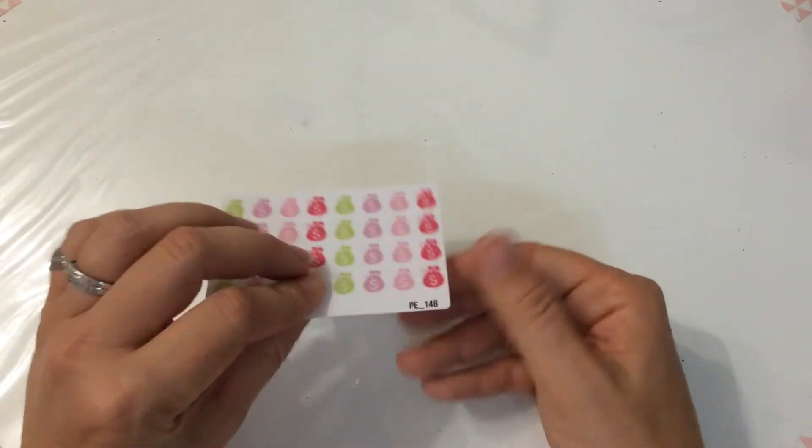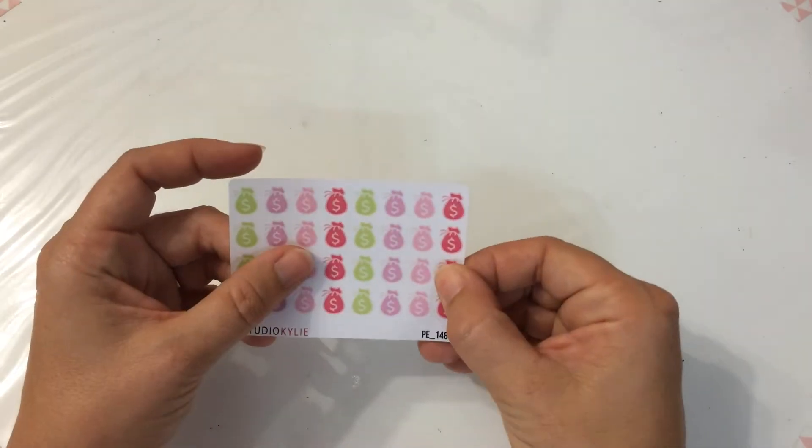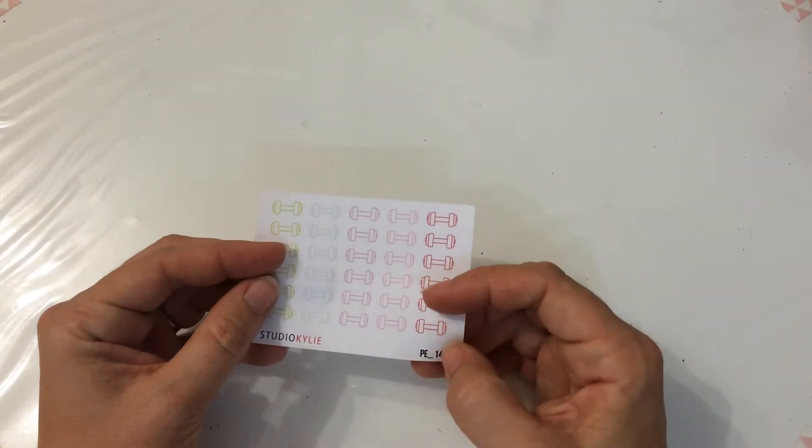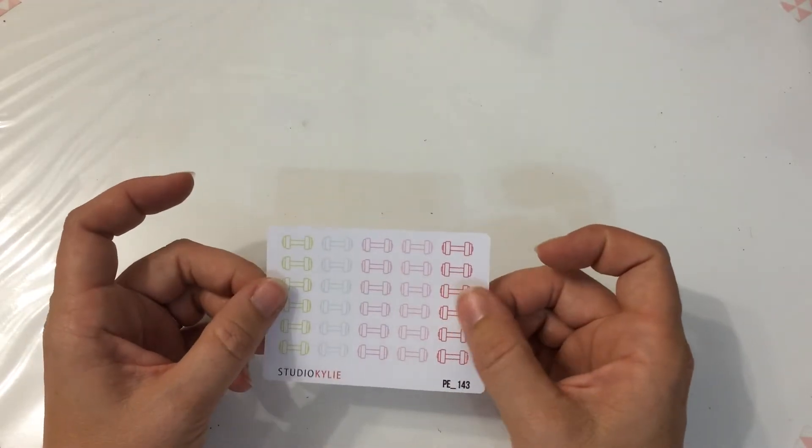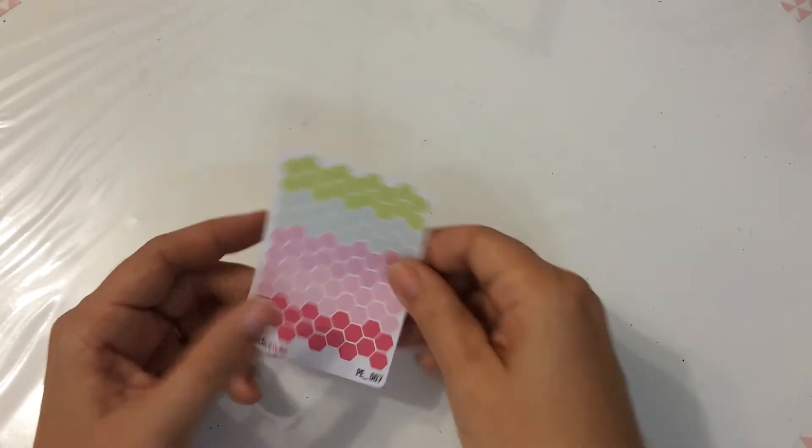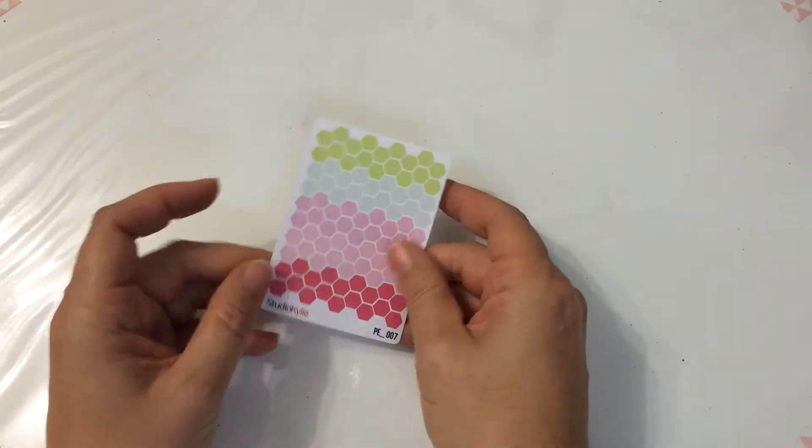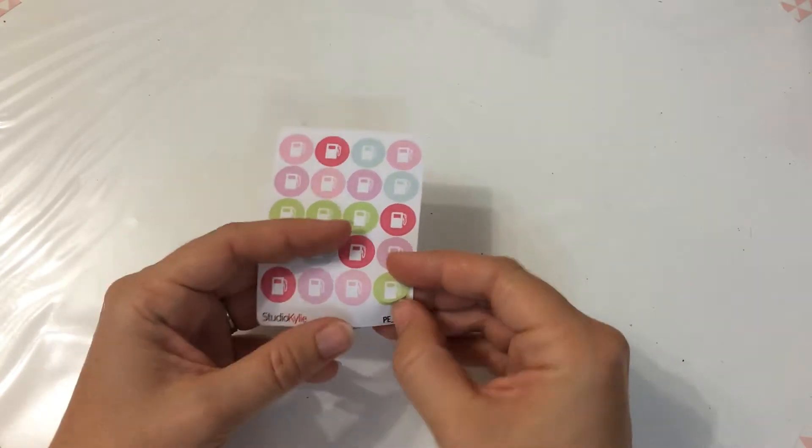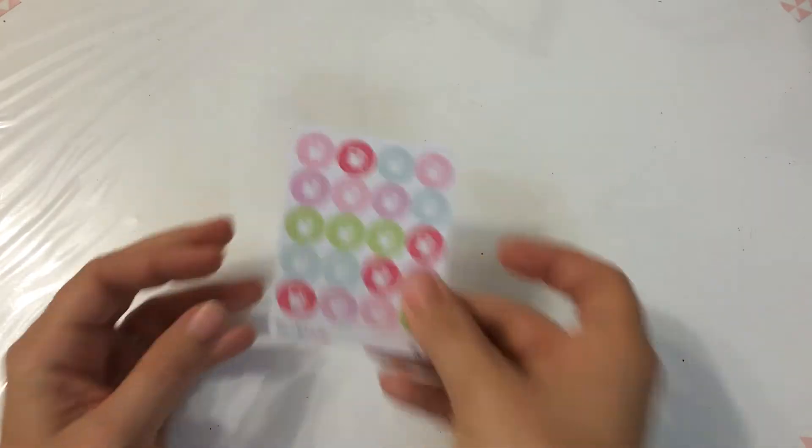I haven't had one issue with them peeling up. There's money bags, weights which I'll probably use for like steps maybe because I don't work out at the moment. These, which I use to make little lists. Petrol icons.